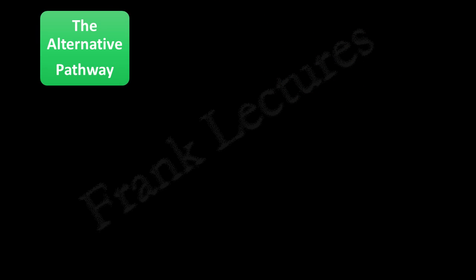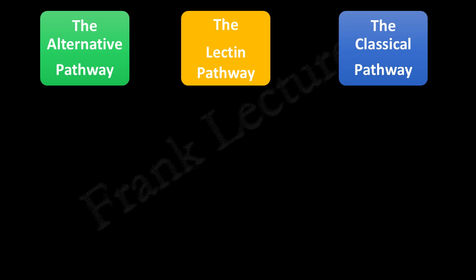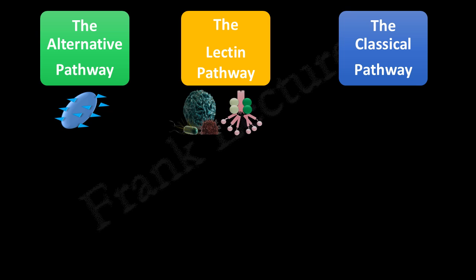To recap: the complement system is a group of serum proteins that assists or complements immune cells in destroying invading pathogens. There are three pathways of complement activation — the alternative pathway, the lectin pathway, and the classical pathway. The alternative pathway is initiated by the pathogen or antigen alone. The lectin pathway is initiated by mannose-binding lectin. The classical pathway is initiated by antibodies.